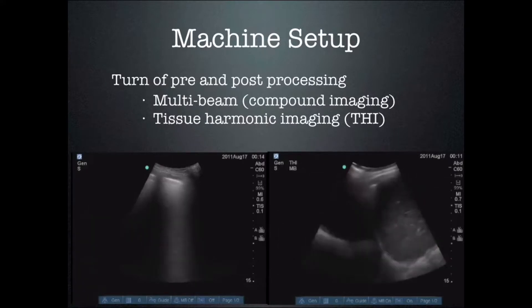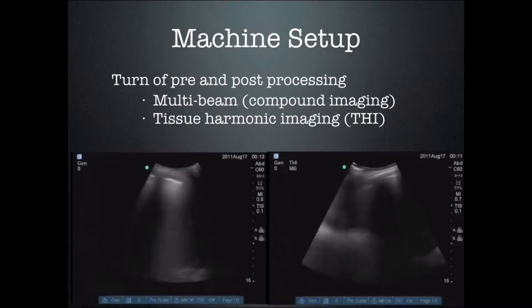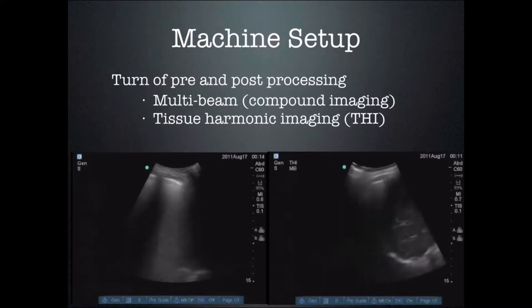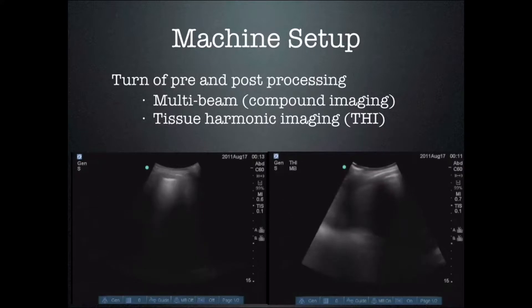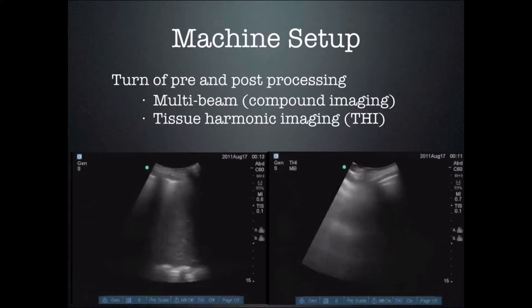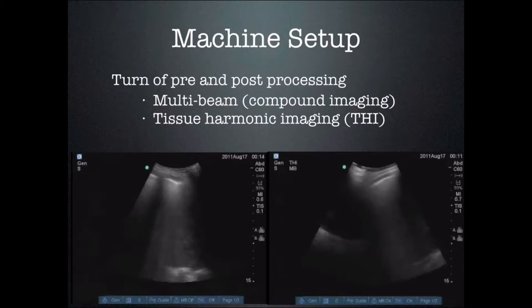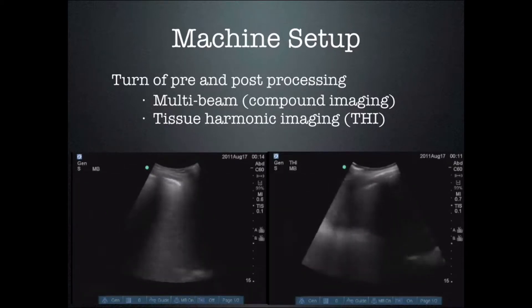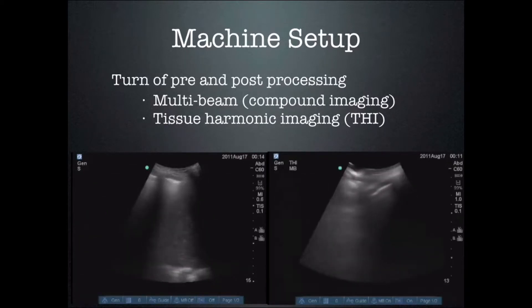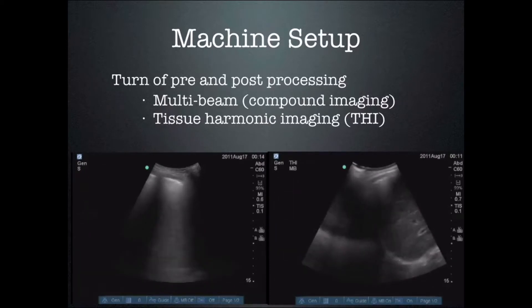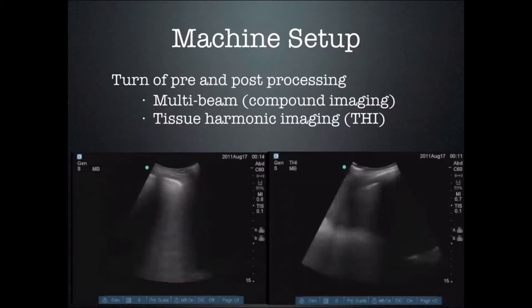Every once in a while we see one that comes off the screen, but it is a little more difficult to see. That is because the image on the right has multi-beam or compound imaging turned on as well as tissue harmonic imaging. Both of these modes decrease the amount of artifacts seen after the image has been displayed. So if you want the classic appearance of lung rockets you may have to turn off multi-beam or compound imaging as well as tissue harmonic imaging.